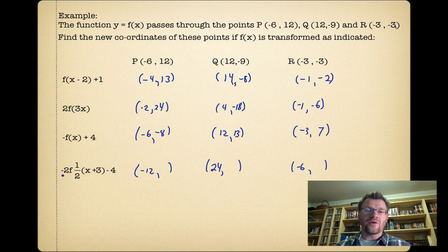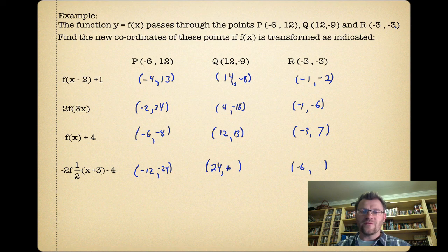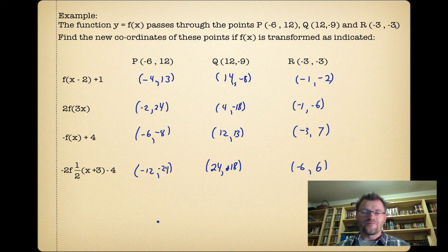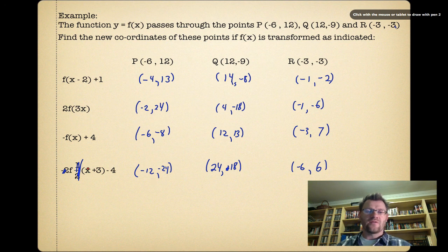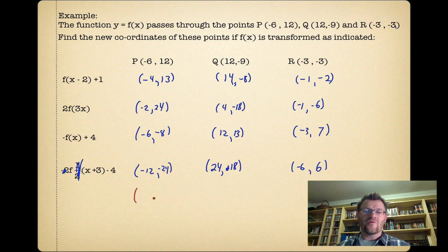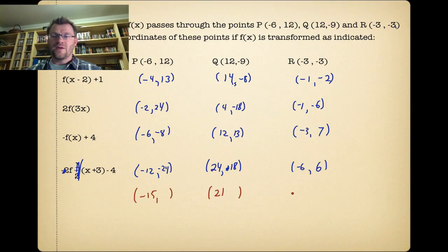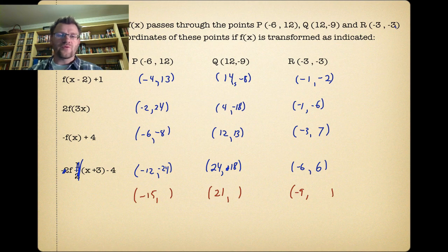Now our y-values all get multiplied by −2: that becomes −24, that becomes positive 18, and that becomes positive 6. So that gets rid of the 2 and the half. Now we can apply our two shifts. Our x's get moved left 3, and our y's get moved down 4. If we move our x's left 3, that becomes −15, that becomes 21, and that becomes −9. If we subtract 4 from all our y-values, that becomes −28, that becomes 14, and that becomes 2.